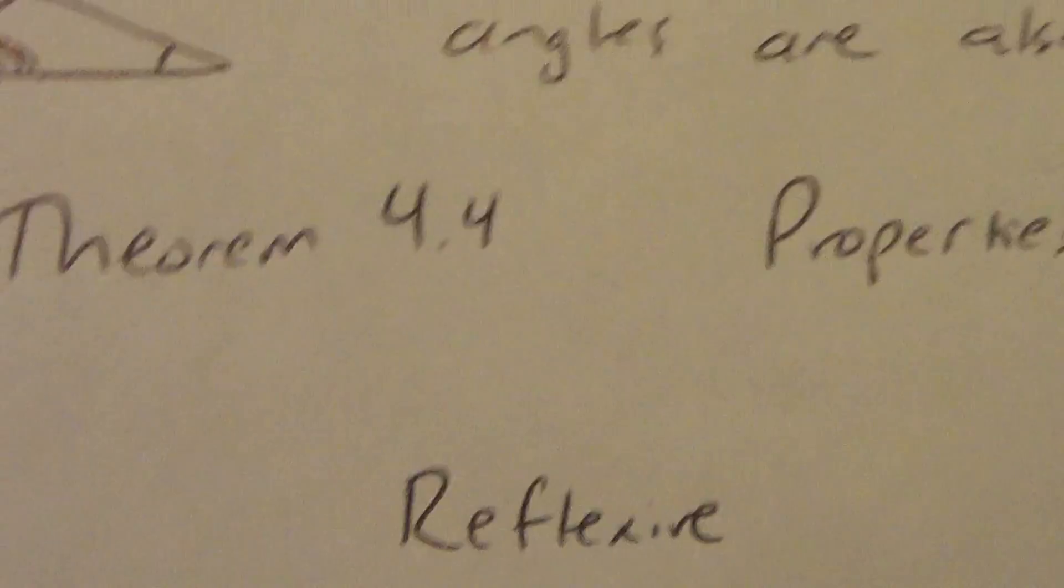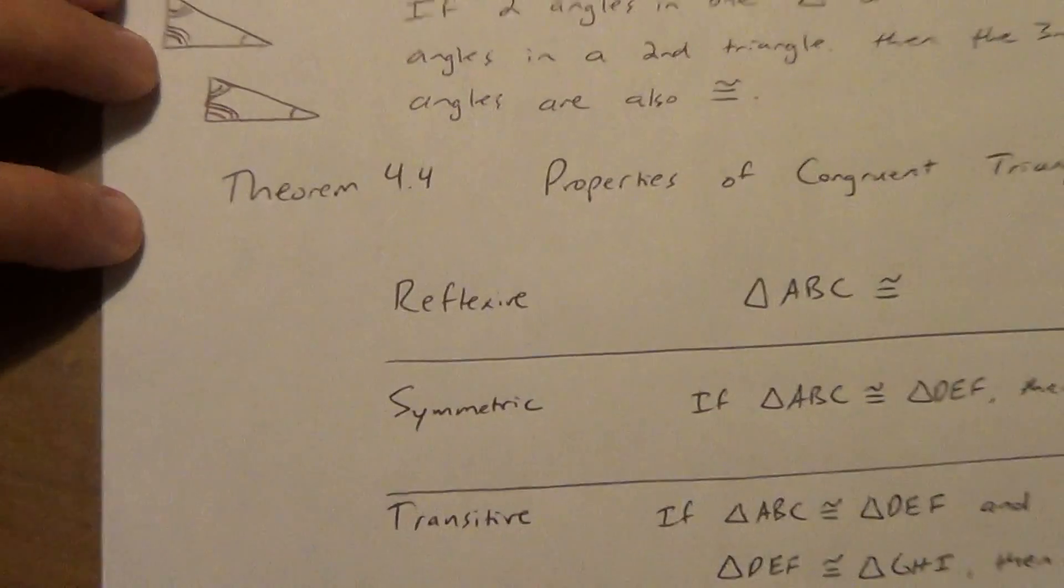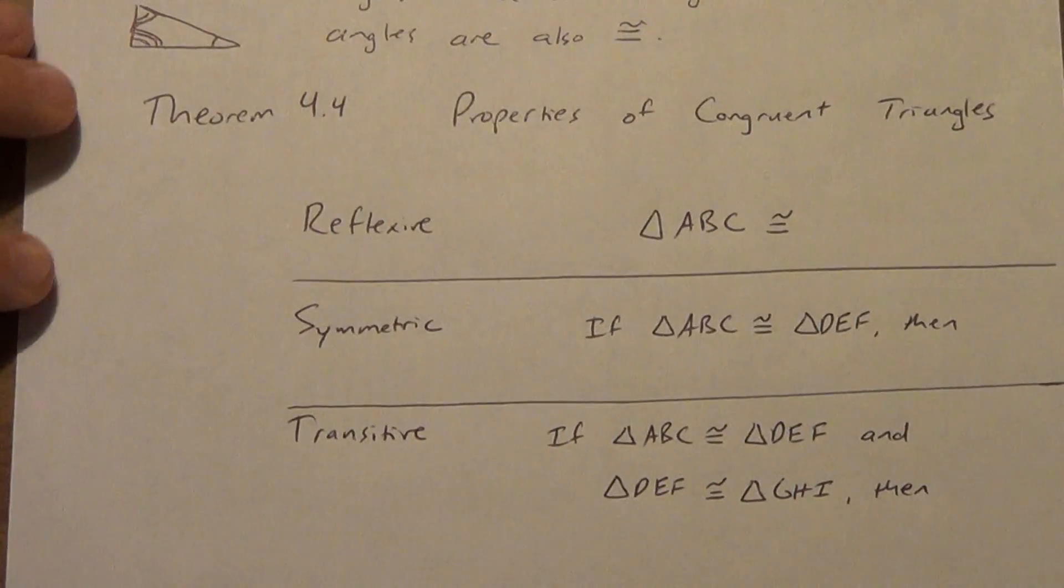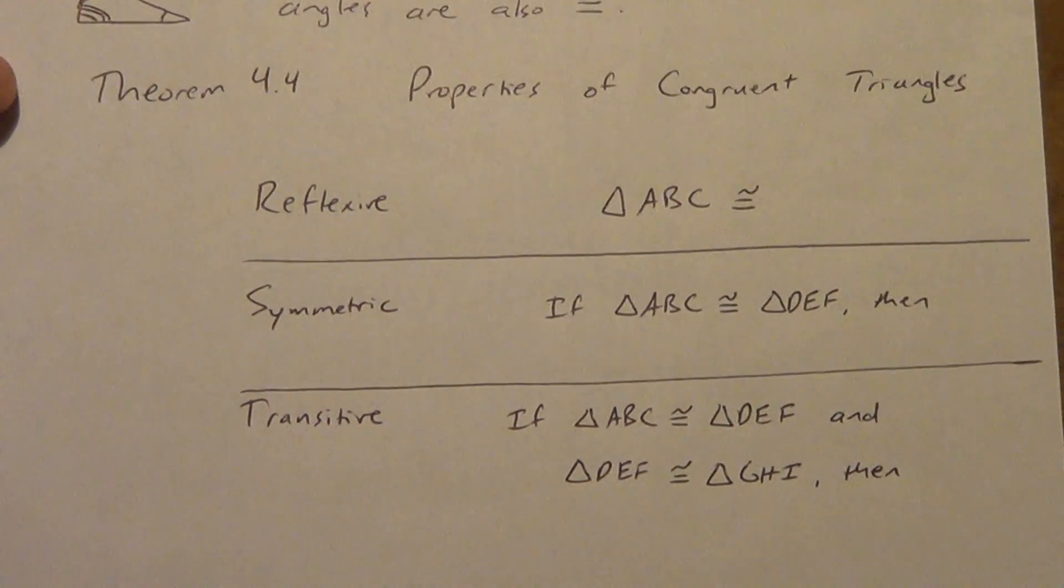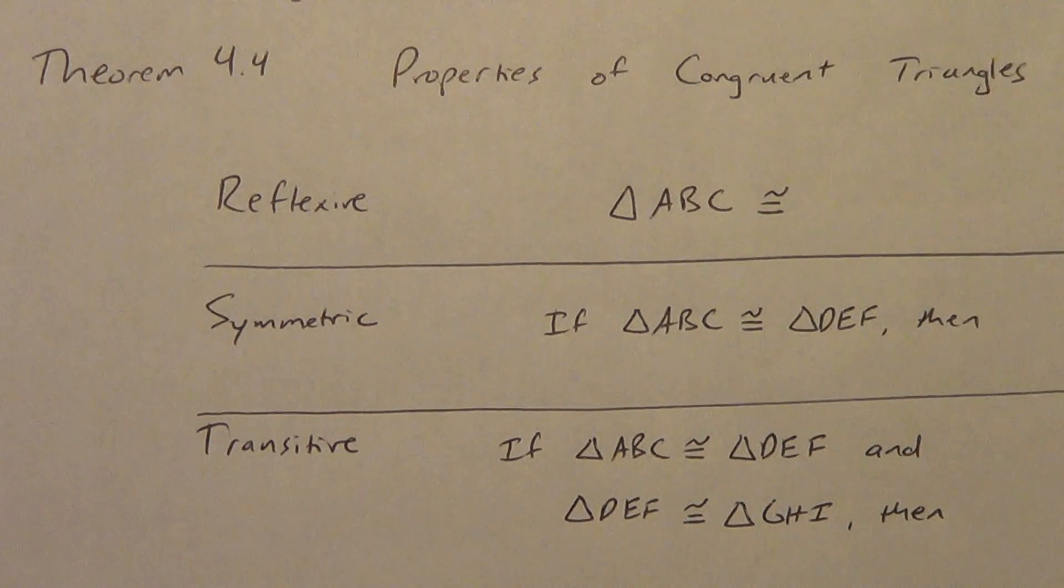Next, Theorem 4.4, called Properties of Congruent Triangles. You guys remember these properties that we talked about in a previous chapter: reflexive, symmetric, and transitive? If not, we need to review them because they're showing up again.